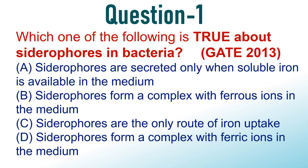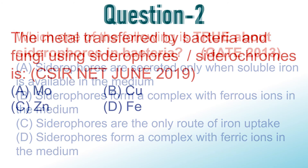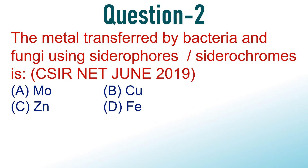Write your response in the comments section. Question number 2: The metal transferred by bacteria and fungi using Siderophores or Siderochromes is? This is a CSIR June 2019 question. The four options are: Molybdenum, Copper, Zinc, and Iron. Choose the correct option and write your response in the comments section.